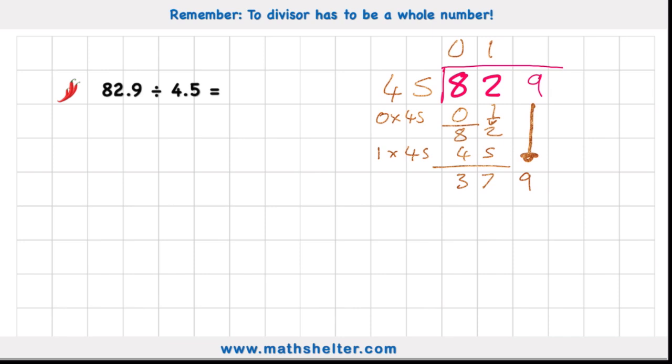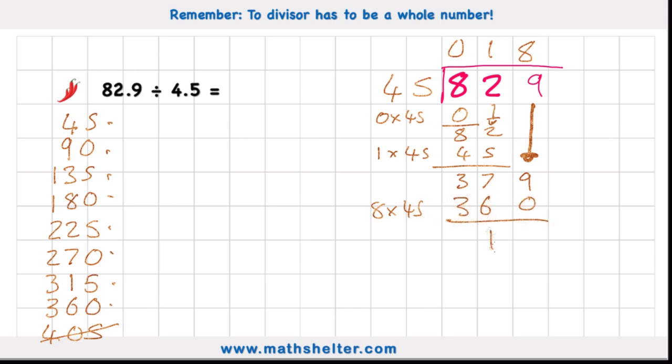Now I need to work out how many 45s there are in 379. So what I could do is draw out my 45 times table: 45, 90, 135, 180, 225, 270, 315, 360. And then 405 would be too much. So I know I have 360, which is 1, 2, 3, 4, 5, 6, 7, and 8 groups. And let's see what 8 times 45 is. It should be 360, which it is. 379 subtract my 360 leaves me with 19.